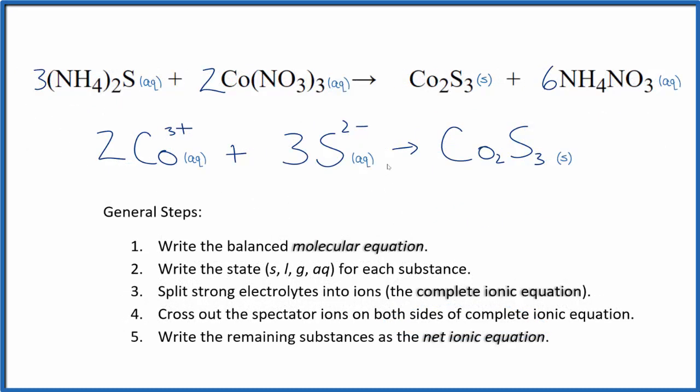So this is the balanced net ionic equation for (NH₄)₂S plus Co(NO₃)₃. You'll note that charge is conserved. We have two times three plus, that's six plus. Three times two minus, that's six minus. So this all adds up to zero, net charge of zero. This is a neutral compound, net charge of zero.